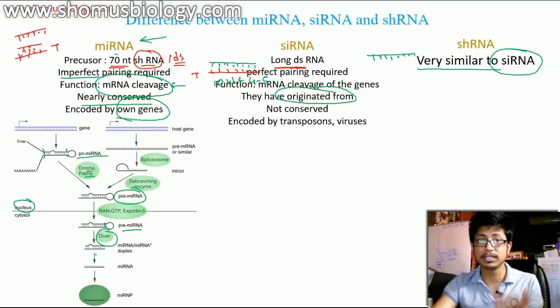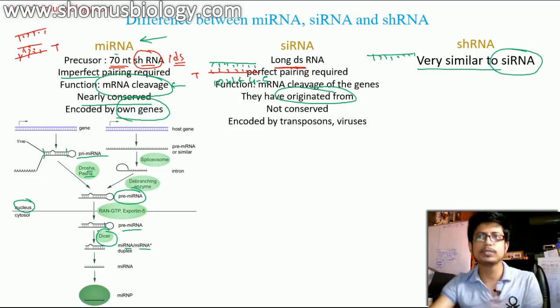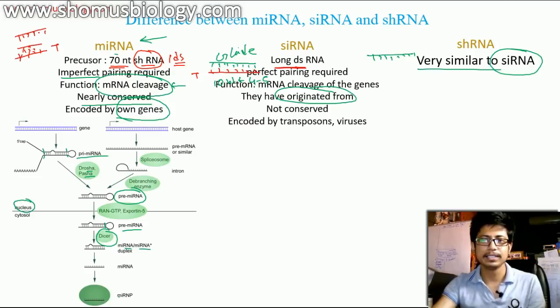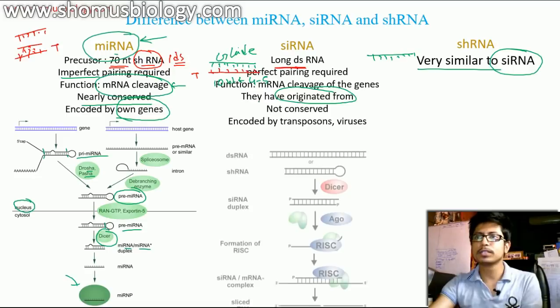Once we get the pre-miRNA, the loop is still present. For further processing, dicer cleaves that loop out. But first, the pre-miRNA must be transported into the cytosol. Once in the cytosol, dicer cleaves the loop from the pre-miRNA. After cleavage, we get a double-stranded RNA known as the miRNA:miRNA-star duplex. One strand becomes the guide RNA, which pairs with the target RNA, involves ribonucleoproteins, and destroys the target.